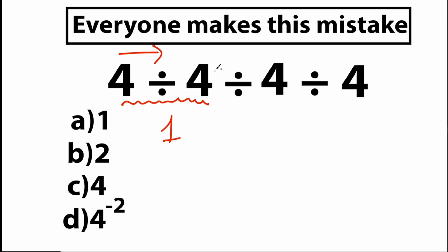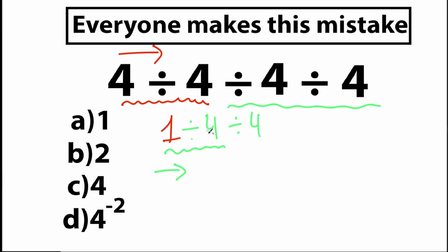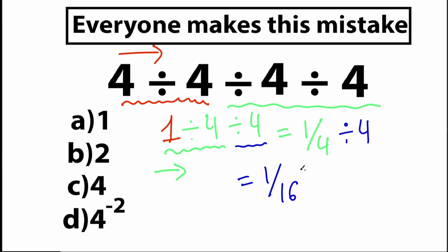We don't jump ahead — we rewrite the remaining expression. We still have division by 4 and then another division by 4. Scanning again from left to right, the first sign gives us 1 divided by 4, which equals one-fourth. Then for the last division by 4, we compute one-fourth divided by 4, which equals 1 over 16.